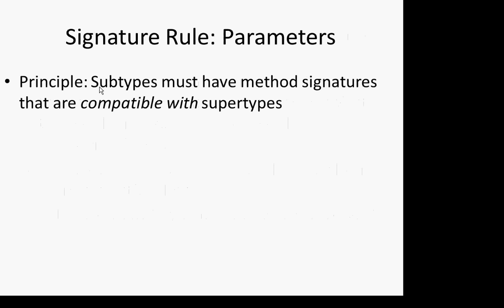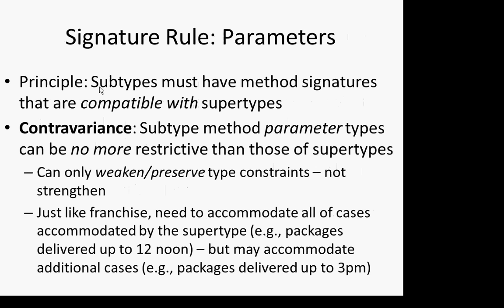So let's talk about the signature rule. We have three things: parameter types, return type, and exceptions. Supertypes and subtypes must have method signatures that are compatible — consistent and safe with respect to each other. The key principle here is known as contravariance, first articulated by Luca Cardelli: parameters are contravariant and return types are covariant.